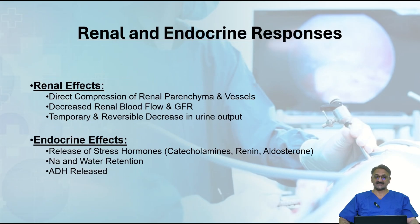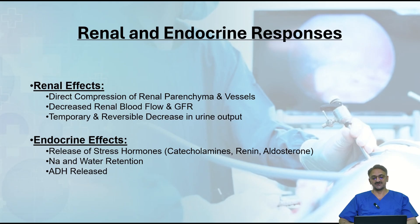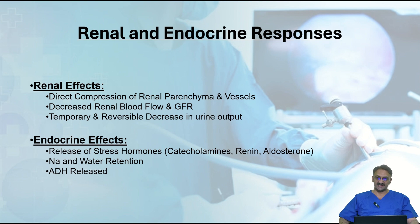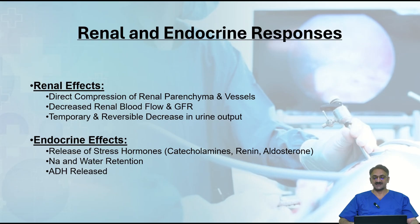The renal and endocrine responses: the renal parenchyma is compressed, the adrenal gland is compressed, and the renal vein is compressed, all leading to decreased renal plasma flow and decreased glomerular filtration rate, causing a temporary reversible decrease in urine output. The endocrine effect includes compression of the adrenal glands, triggering release of stress hormones — catecholamines, renin, and aldosterone — resulting in sodium and water retention, as well as increased release of antidiuretic hormone, further decreasing urine output.